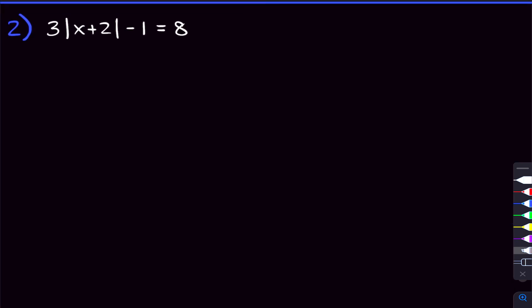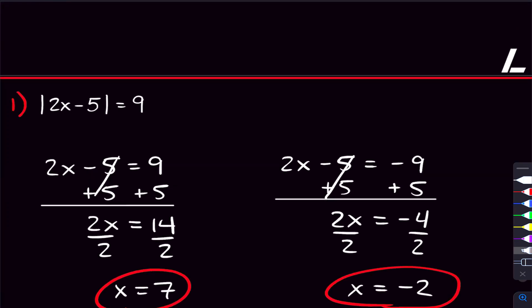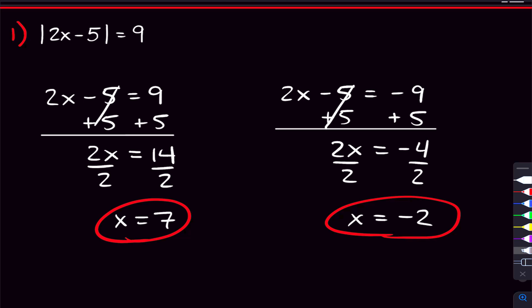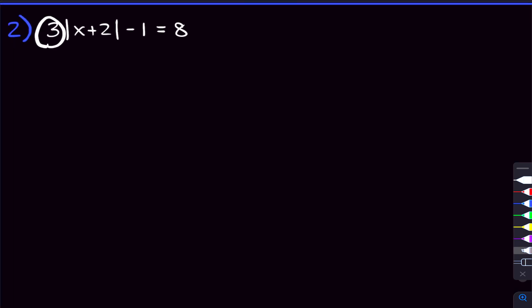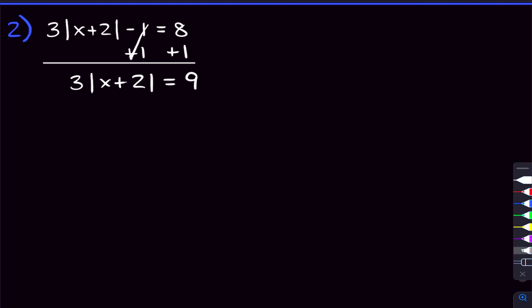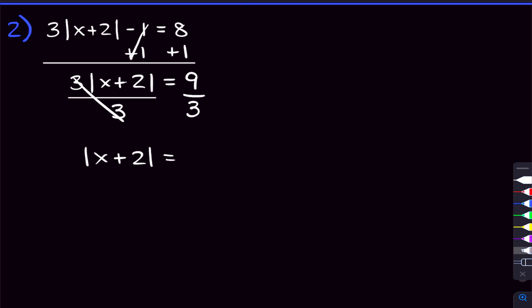Moving on to the second problem. Here the absolute value isn't by itself like before. We had just the absolute value of 2x minus 5 by itself on the left, but here we have a 3 being multiplied and a 1 being subtracted. So we have to get the absolute value by itself before doing what we did in problem 1. We start by adding 1 on both sides to get 3 times the absolute value of x plus 2 equals 9. Then we divide by 3, and now the absolute value is fully isolated: the absolute value of x plus 2 equals 3.